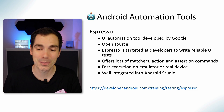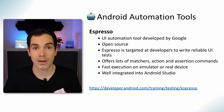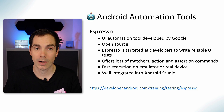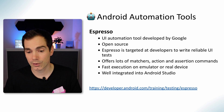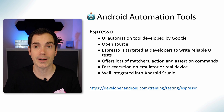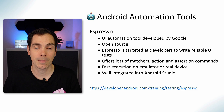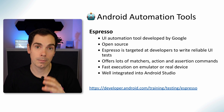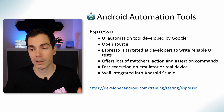Espresso is another Android UI automation tool developed by Google. It's open source and its main target audience is developers writing reliable UI tests. It offers lots of matchers, actions, and assertions for faster execution on real devices and emulators, and it's really well integrated into Android Studio. As you can see, there are many more tools available for Android since it's open source and other developers have built additional tooling.